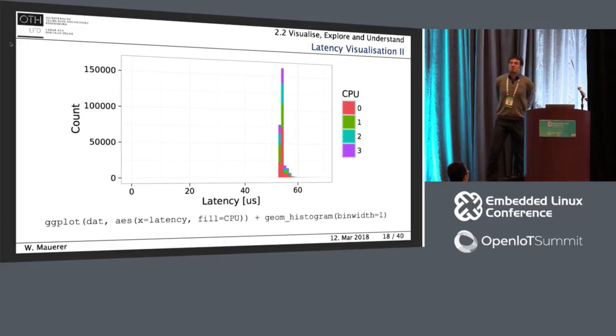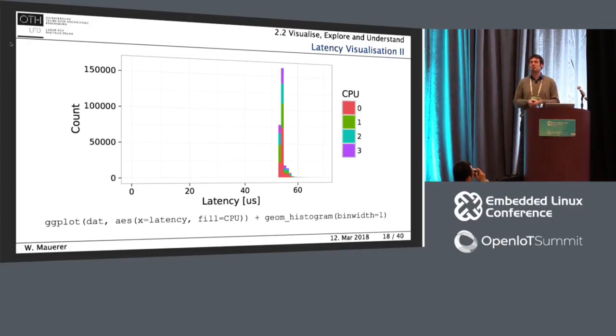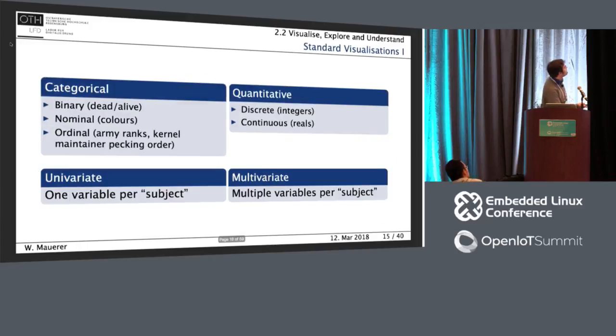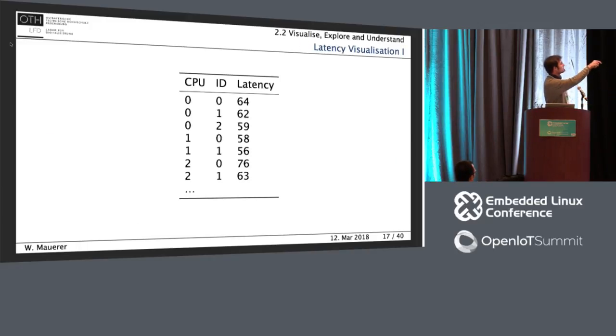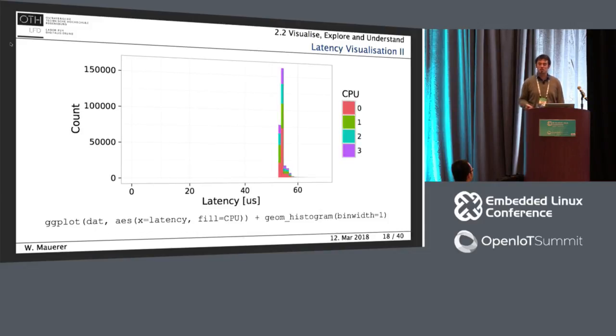That's one of the occasions when you need to manually tell the computer system something about the data so it can better visualize it. Here I've given an explicit parameter to the plotting system that specifies the bin width. I've measured with a resolution of one microsecond, and you see if I make the bins only one microsecond wide, then I already get more details into my graph. I've measured on a multi-core system with four CPUs, and I would like to see how the different CPUs in the systems compare to each other.